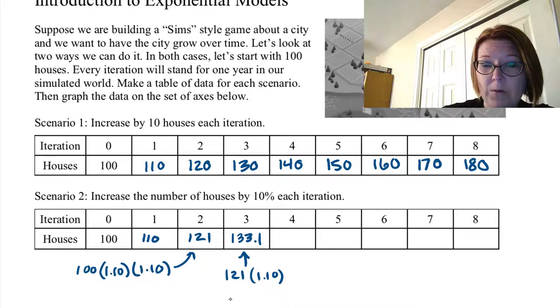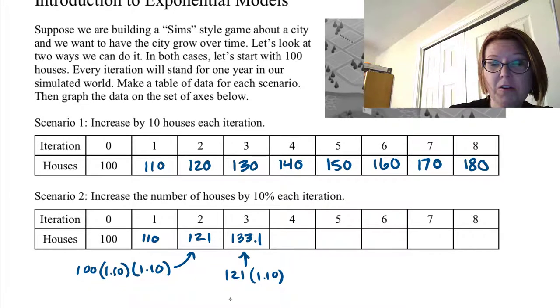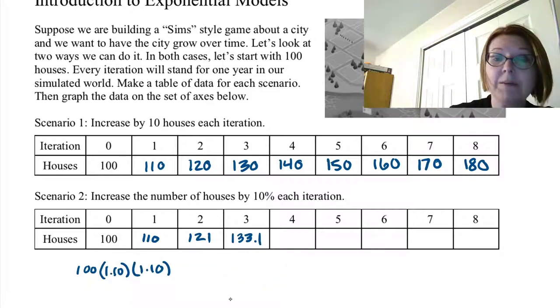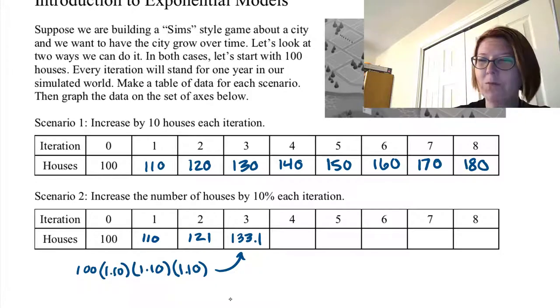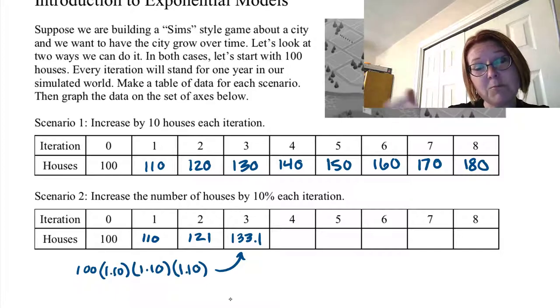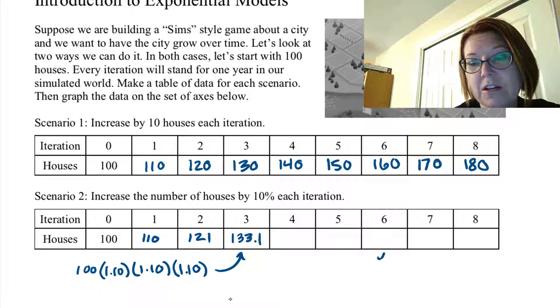We could do it that way or we could go back to how we calculated the previous one and just say we can get this number also by doing 100 times 1.10 times 1.10. Hopefully you're starting to see a pattern here. As we move across we could either multiply by 1.10 every time.